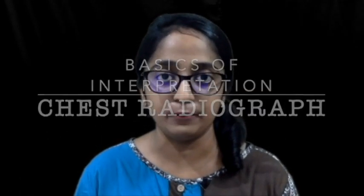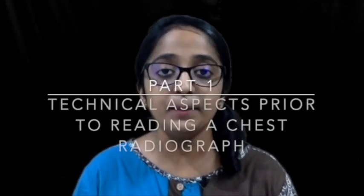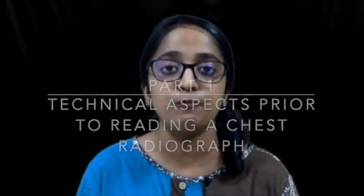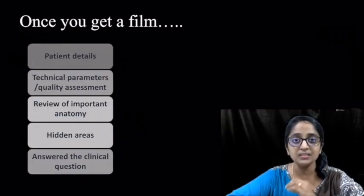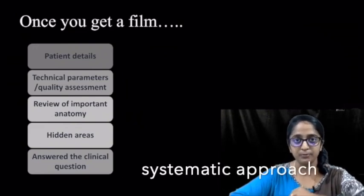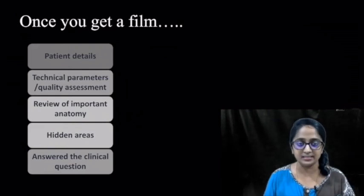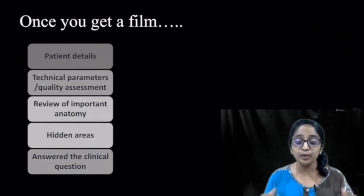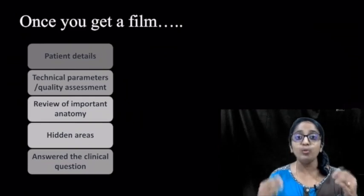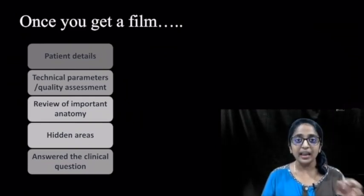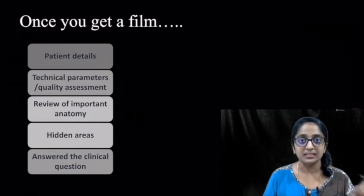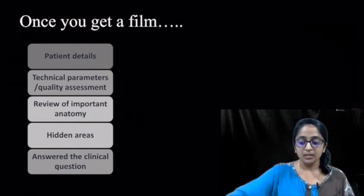I'll be dividing this topic into two parts. In part one, we'll be covering the patient details as well as the technical aspects prior to reading the chest radiograph. First and foremost, you have to adopt a systematic approach. Once you get a film, there are five things to assess: patient details, technical parameters, reviewing normal anatomy, rechecking hidden areas, and finally ensuring the finding explains the patient's clinical symptoms.